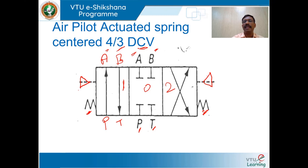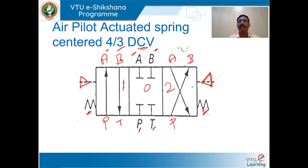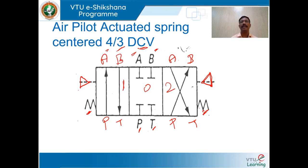When air signal is supplied on the other side of the spool, the valve shifts to position 2 — P connects with B and A connects with T. This is how the symbol is developed for air pilot actuated, spring-centered, four-way three-position directional control valve.